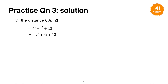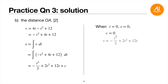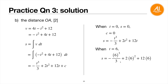To find distance OA, integrate v to get displacement: s = ∫v dt = −t³/3 + 2t² + Ct + C₂. Using the initial condition t = 0, s = 0 (starts from fixed point) gives C₂ = 0. So s = −t³/3 + 2t² + Ct. Point A is reached at t = 6 s (the turning point), so substitute t = 6 into the displacement equation to get s = 72 meters.